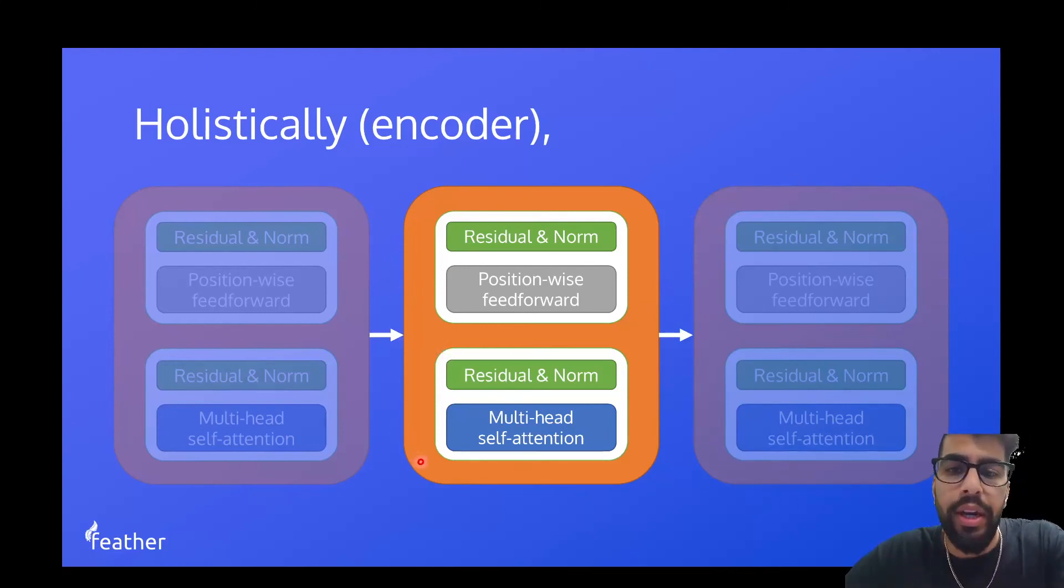Now, in one encoder layer, there are two sub-layers which are depicted by what's in between the white boxes. Okay, so this is one sub-layer and this is the other sub-layer.